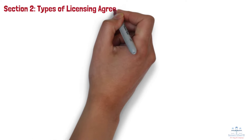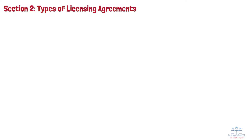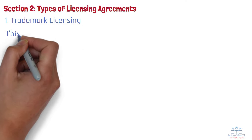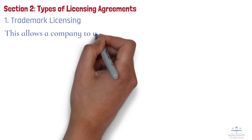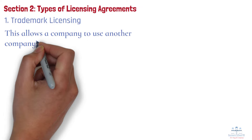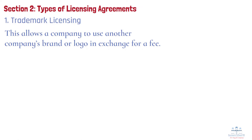Section 2: Types of licensing agreements. Here are three major types of licensing agreements. Number 1: Trademark licensing. This allows a company to use another company's brand or logo in exchange for a fee. For example, a sportswear manufacturer may license the Nike or Calvin Klein logos to produce and sell clothing under their brands.